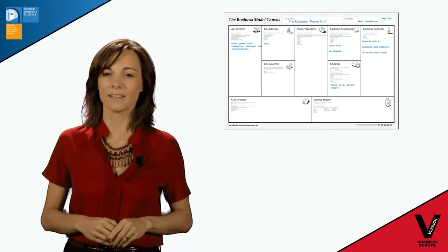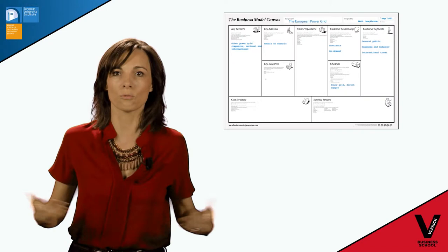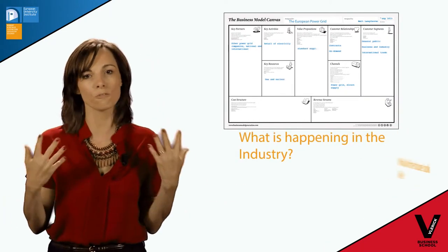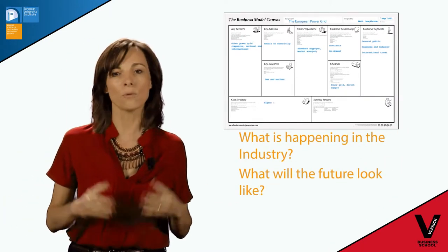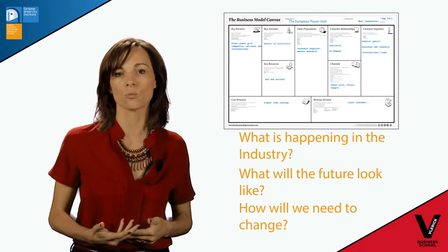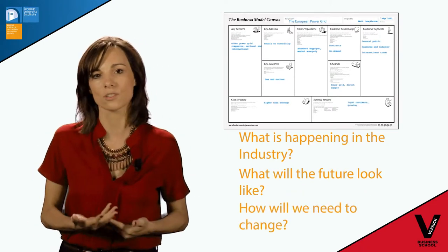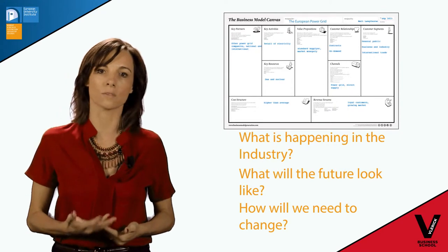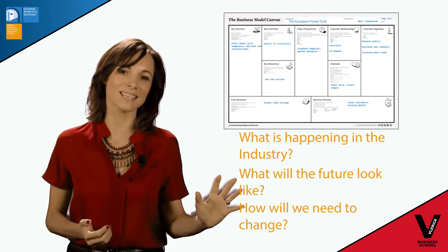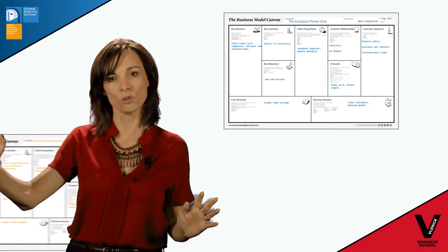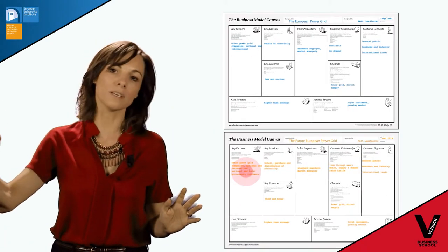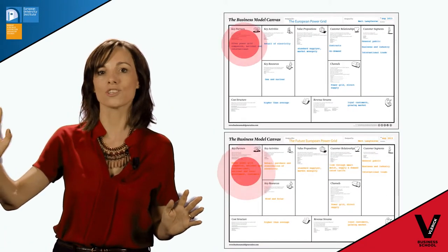Second, we're going to ask ourselves what is happening in our industry. What will the future look like, and what does that mean for how we need to change? What adaptations are needed for our business model? So we can contrast the as-is business model with the future business model. Where do we see the biggest changes happening?